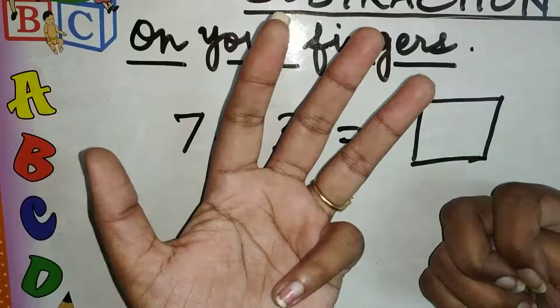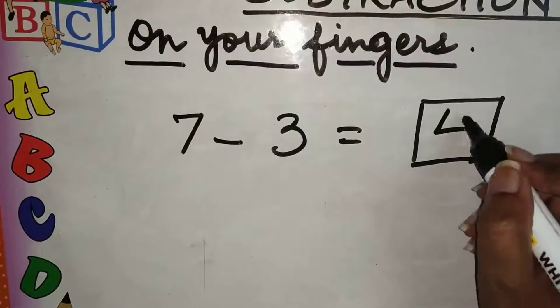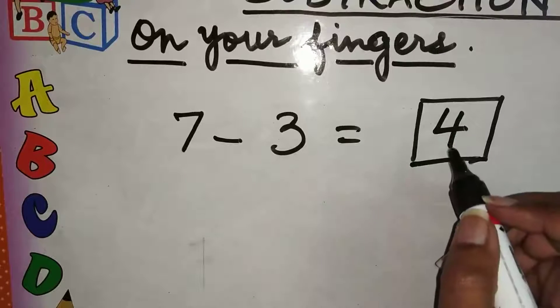So, we are left with how many fingers? One, two, three and four. So, our answer is four. Seven minus three is four.